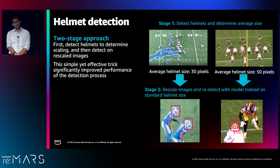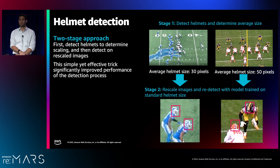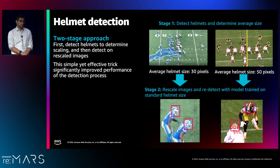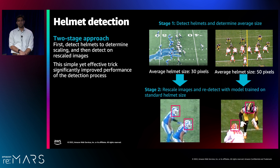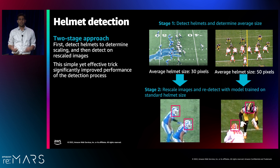Now I'm going to talk about helmet detection. You might not think this is too hard, but having a good helmet detector is really important for our system — if we can't detect a helmet, we can't detect if an impact occurred. The novel approach that came out of our Kaggle solution was taking a two-stage approach: we have an object detector that detects all helmets in every frame and determines the average size of those helmets, then a second model trained on expecting a certain size of helmets predicts those in the second stage. This simple yet effective trick really improved the accuracy of our helmet detector.